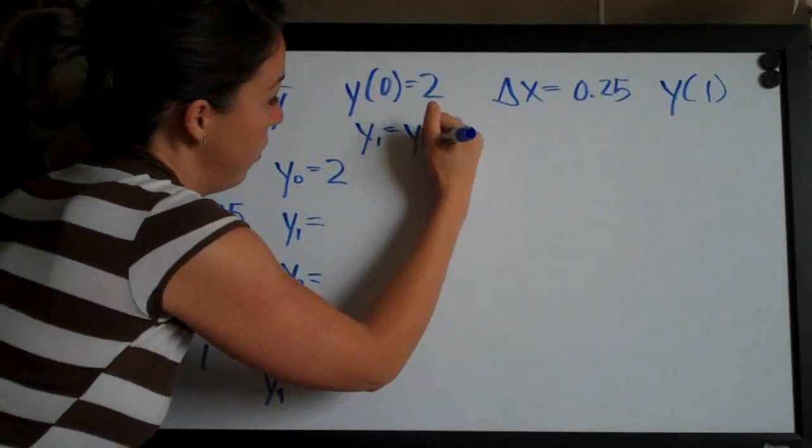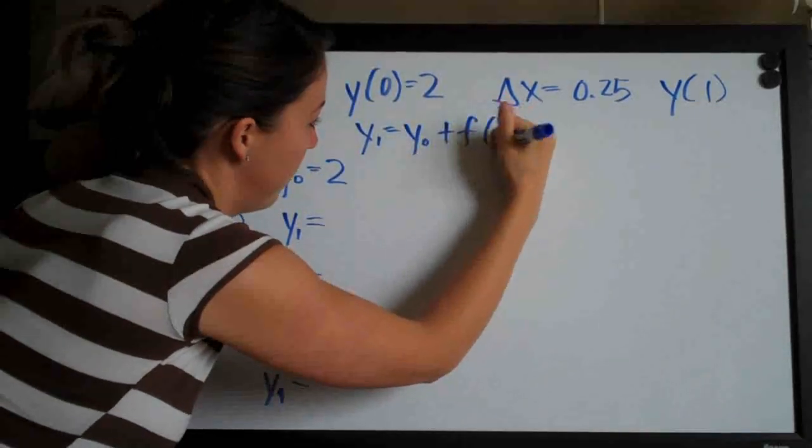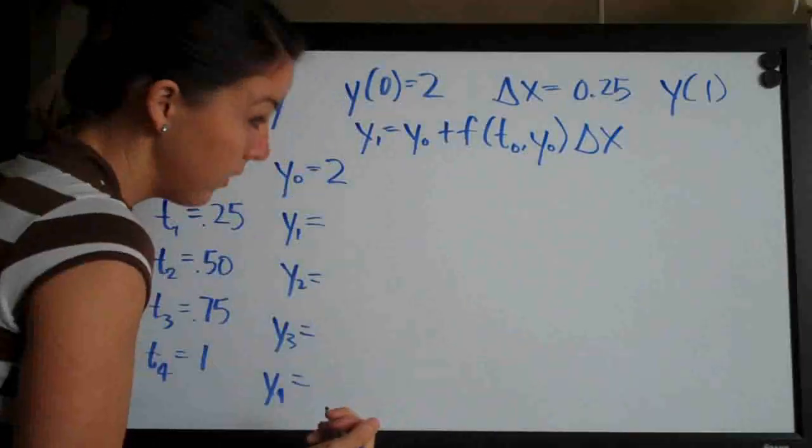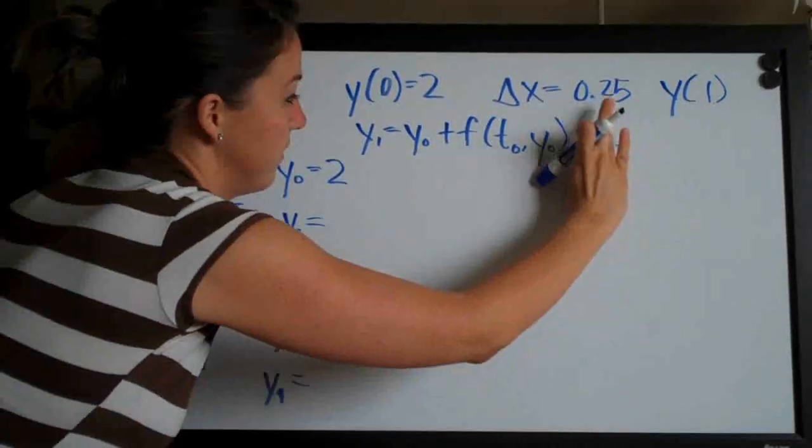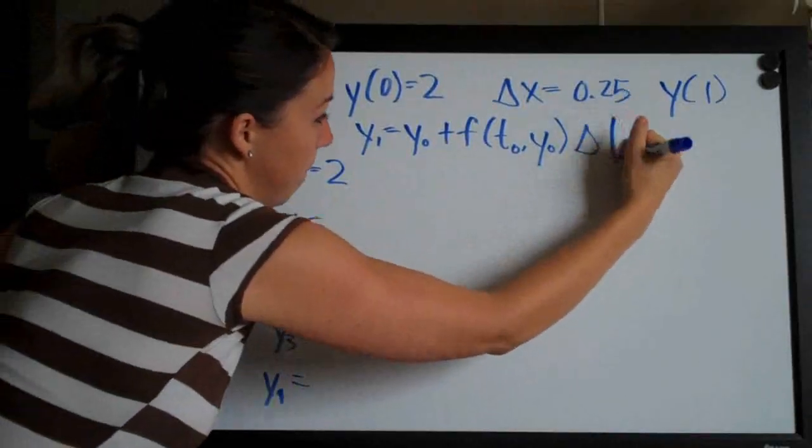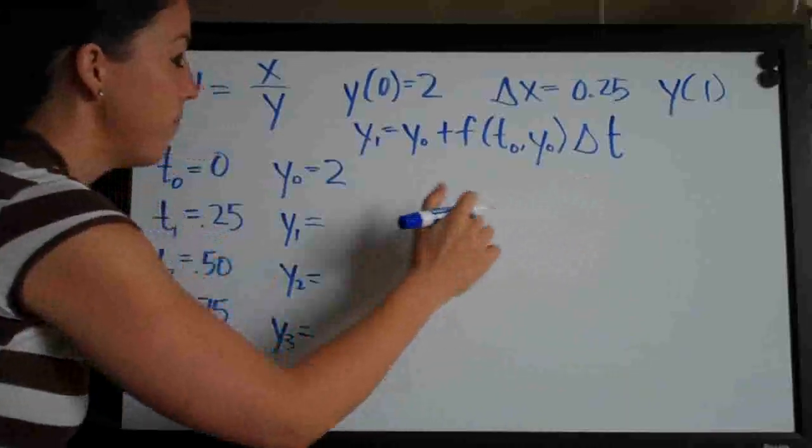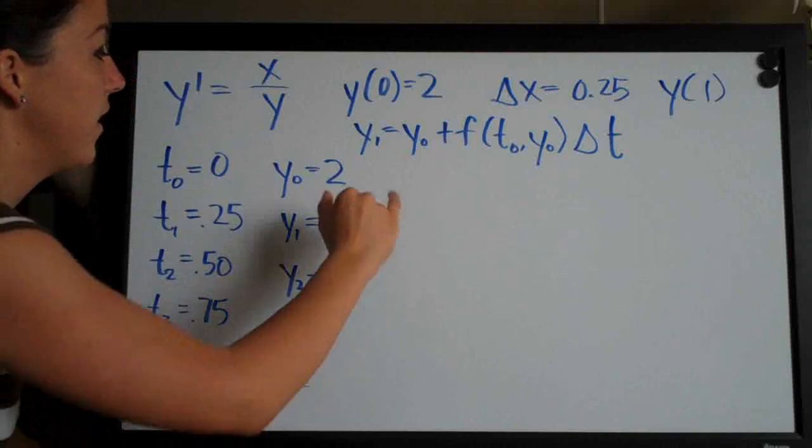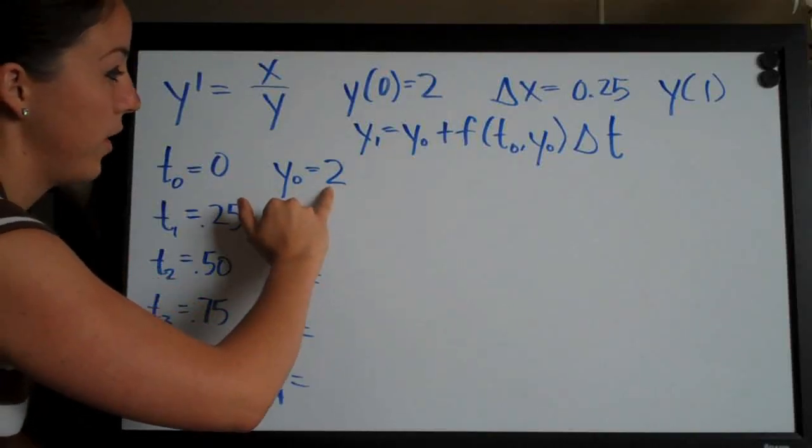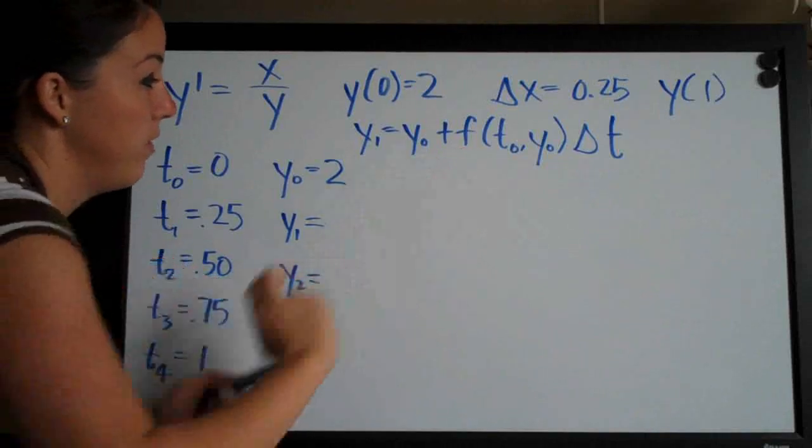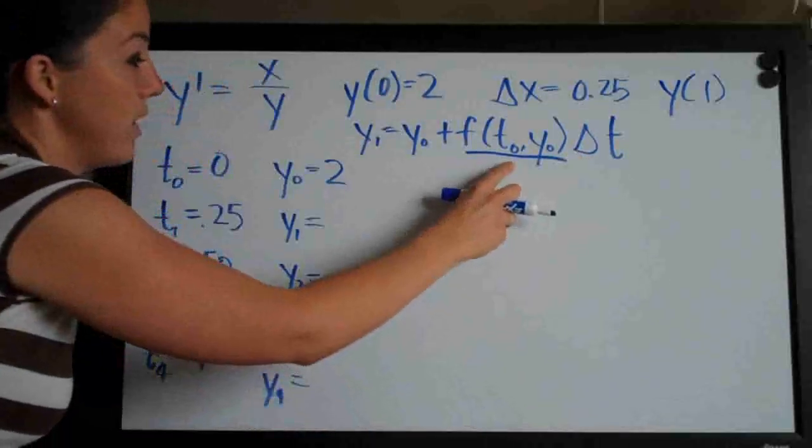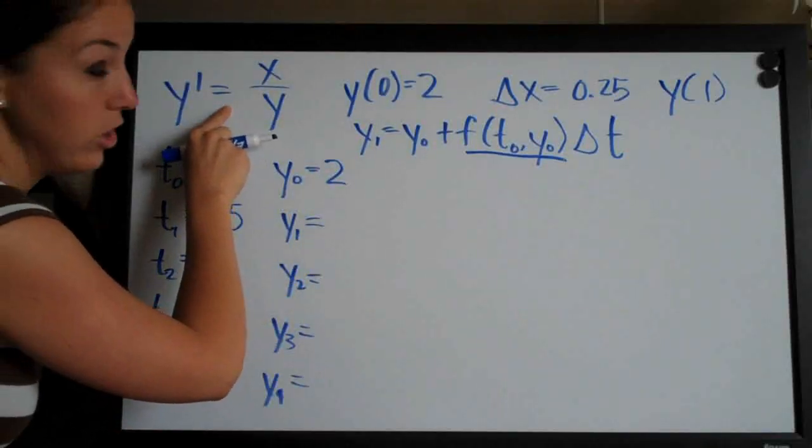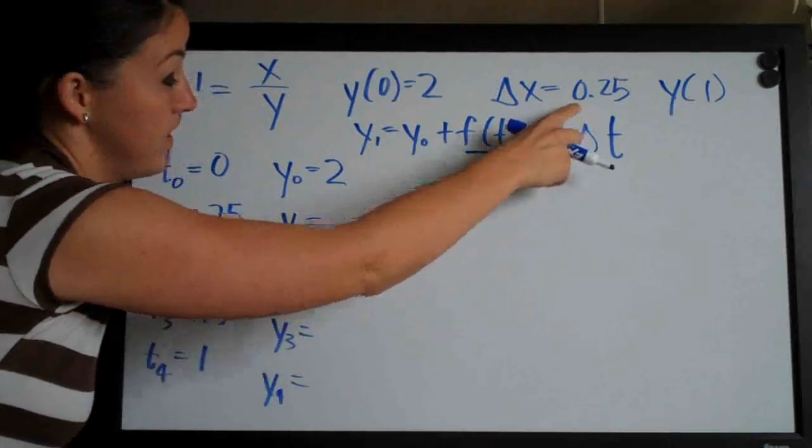The only thing really that you need to know is y of 1, and I'll go ahead and write it right here: y of 1 equals y of 0 plus f of (t0, y0) times delta t. Okay, so this is the formula for y of 1 here - how we're going to find y of 1. And all this says is y of 0, so here's our y of 0 value, and then this part here is whatever you get when you plug in t0 and y0 to the original function, and then multiply everything times delta t, which we have.